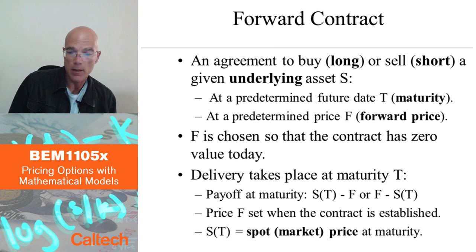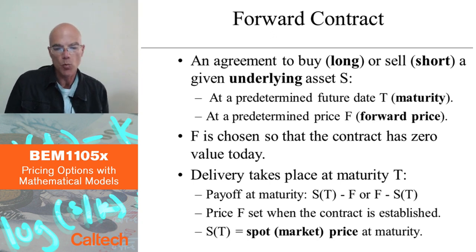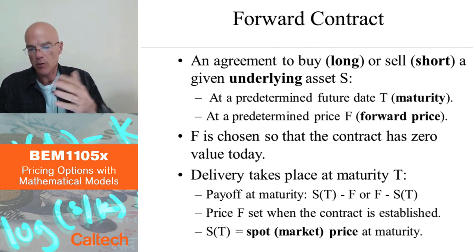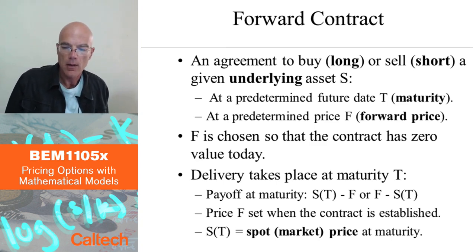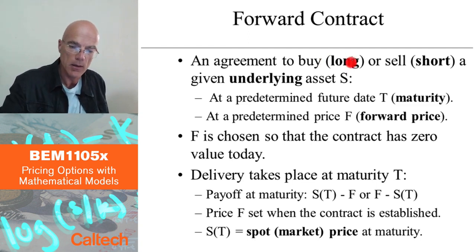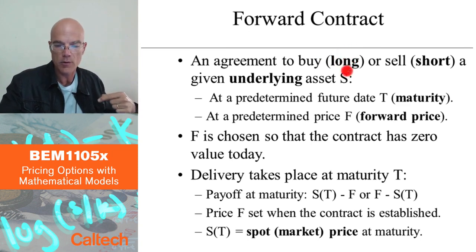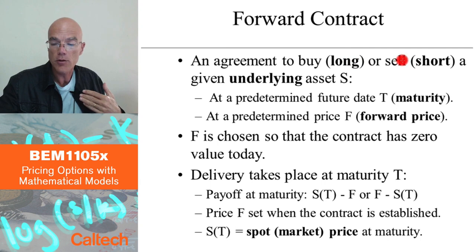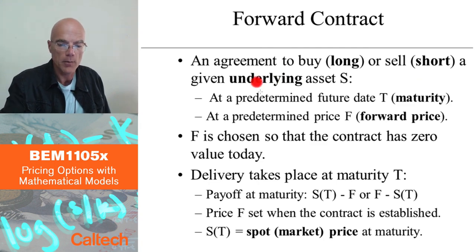A bit more terminology: it's an agreement to buy or sell a given underlying asset S, or commodity like sugar, at a predetermined future time called maturity, at a predetermined price. If you are the person who is going to receive sugar, you say that you buy the forward contract — you are long. Long means buying. If you are the person who is going to deliver sugar and receive cash, then you are short the forward contract. The underlying is just the asset on which the derivative is written.